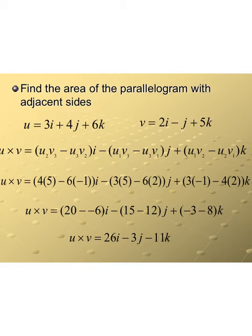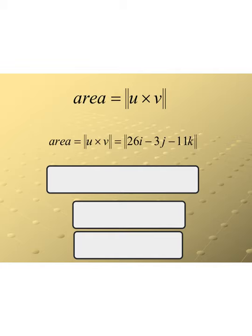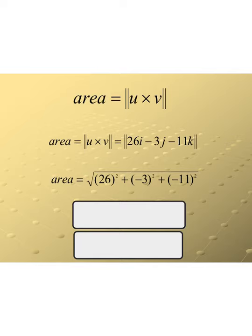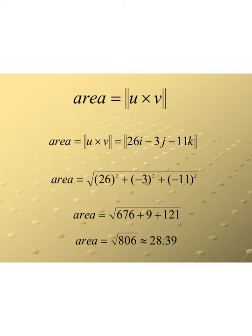Now we take this cross product vector and find its magnitude to get the area of the parallelogram. Taking the square root of 26² + (−3)² + (−11)² gives us the square root of 806, which is approximately 28.39 square units.